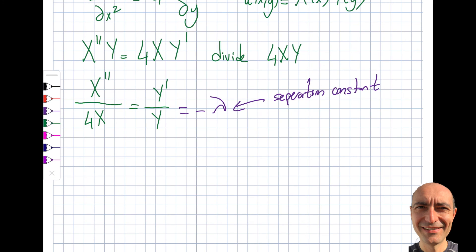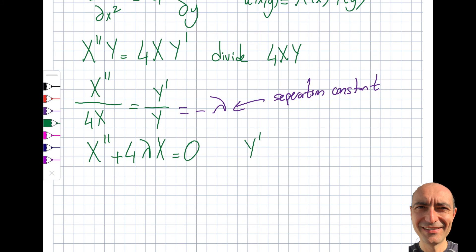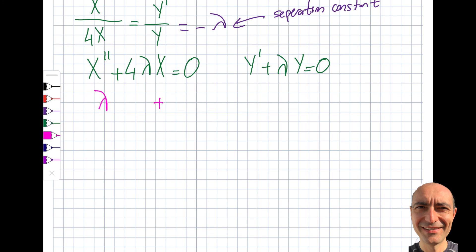This gives two ODEs: the first is X″ + 4λX = 0, and the second is Y′ + λY = 0. The separation constant λ can be positive, negative, or zero — those are the three options since it's a real number. I'll analyze each case separately.